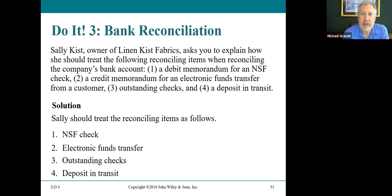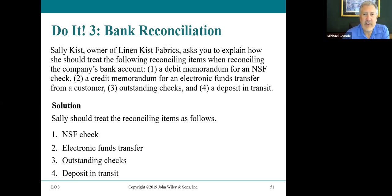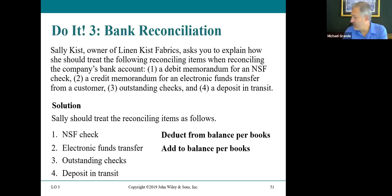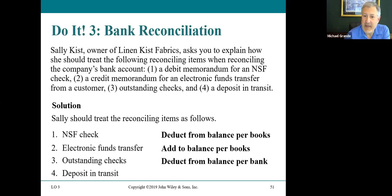Reconciliation summary: a debit memorandum and NSF check are deducted from the balance per books; an electronic transfer credit memorandum is added to the balance per books. Outstanding checks are deducted from the balance per bank. Deposits in transit are added to the balance per bank.